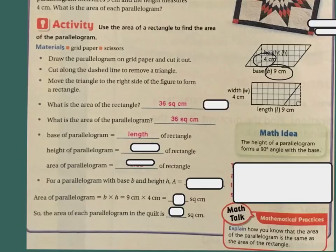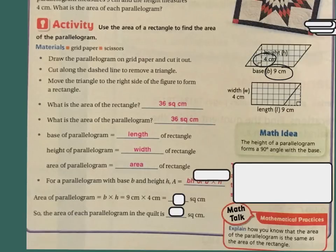So my base of the parallelogram is the length, which was nine. The height of the parallelogram is the width, which was four. So the area of the parallelogram equals base times height. The area of a parallelogram is base times height equals nine centimeters times four centimeters, which is 36 centimeters. So the area of the quilt is 36 centimeters.